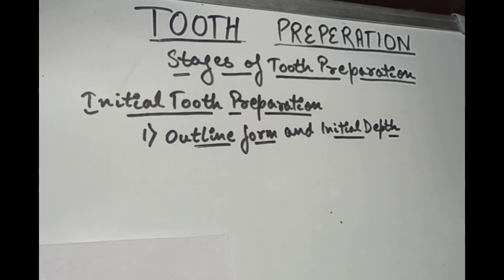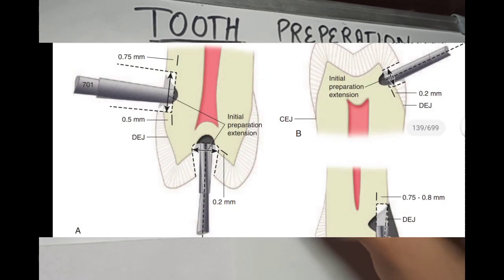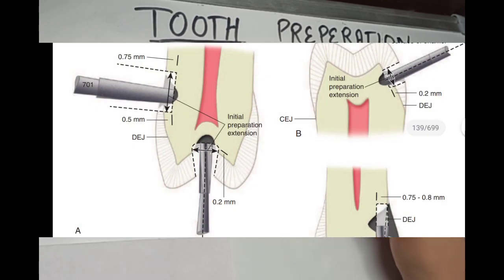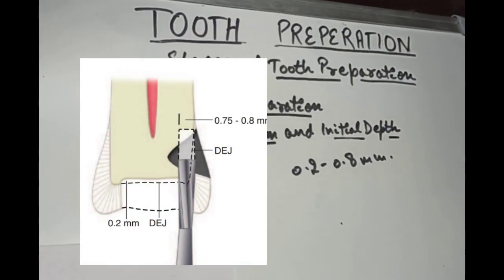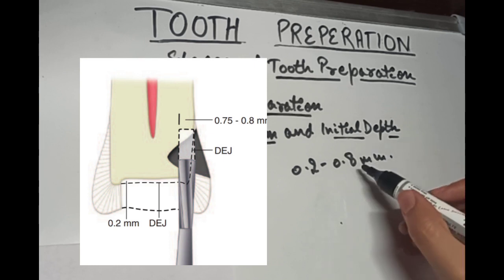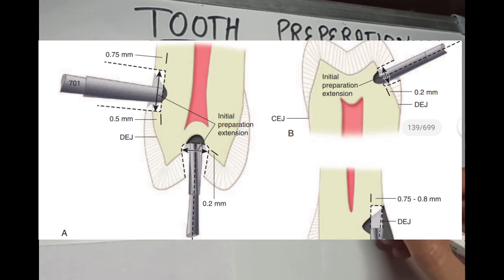The finishing of the enamel walls and the margins is not done in this step. The advantage is you get an idea of the outline form before you start cutting, which prevents over-extension of the preparations. The preparation of an initial depth is 0.2 to 0.8 mm into the dentine; the greater depth of 0.8 mm is for extension on the root surface. Otherwise the depth in dentine should not exceed 0.2 to 0.5 mm.